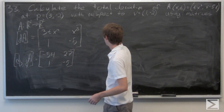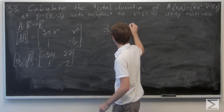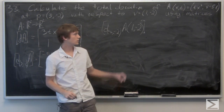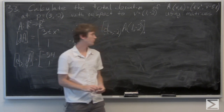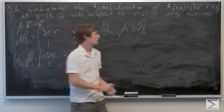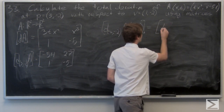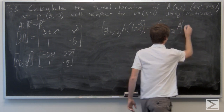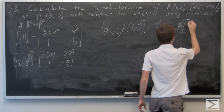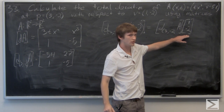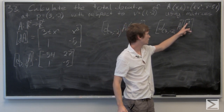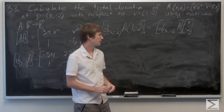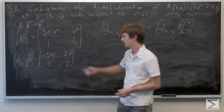Then we can calculate the total derivative of a at the point (3, -2) with respect to the vector (1, -2) by creating a 2 by 1 matrix with components 1 and -2, and multiplying that by the Jacobian matrix evaluated at (3, -2).